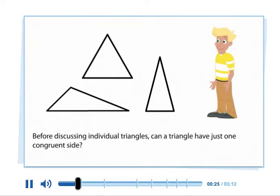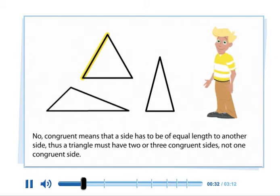Before discussing individual triangles, can a triangle have just one congruent side? No. Congruent means that a side has to be of equal length to another side. Thus, a triangle must have two or three congruent sides, not one congruent side.